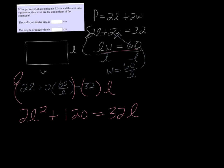Well, now I have a squared term, so it's quadratic. So I want to set one side equal to 0. So I'm going to bring that 32l over.